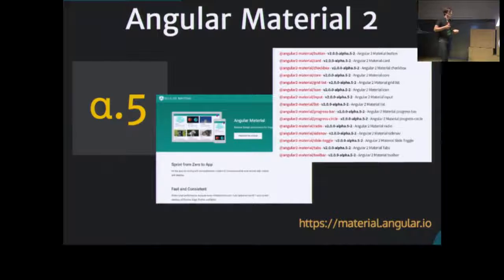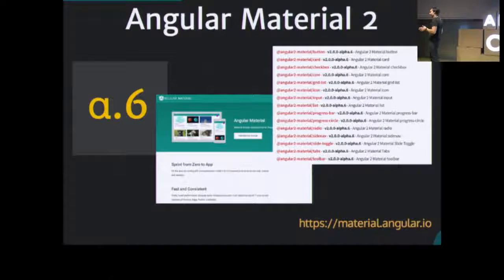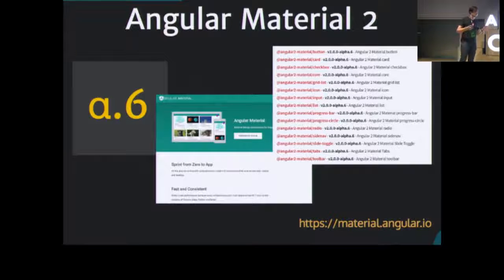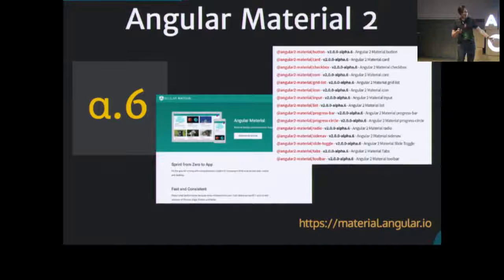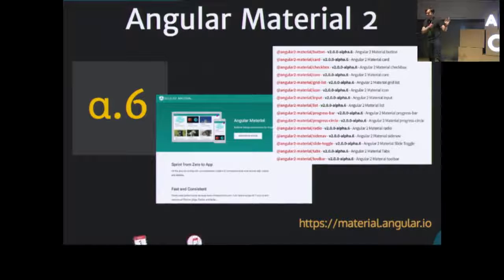Yesterday, just before I jumped on the plane, they released a new alpha, so I spent some hours updating my code and retesting everything, so hopefully my demo will work today. And we are really on the bleeding edge—after I landed, I've seen the message that Angular 2 released release candidate 4, but my code still uses RC3 for stability.